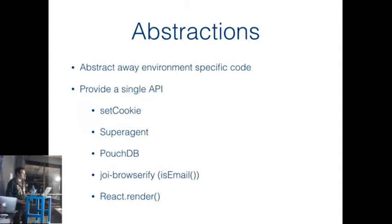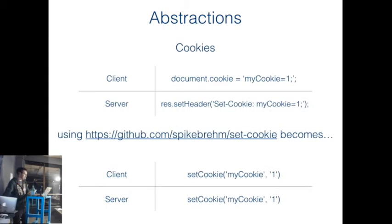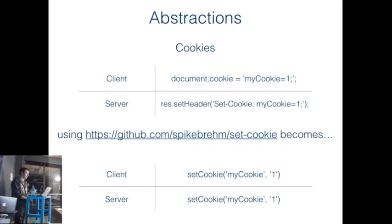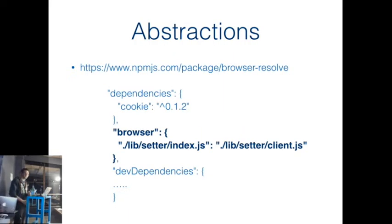React's render also works on both client and server. To show what these abstractions do under the hood - with setCookie, you don't want to be setting cookies with different code on client and server. On the client you'd set document.cookie, on the server using something like Express you'd use res.setCookie. The abstraction gives you a single API. There's clever tooling in NPM for this where you use your package.json to specify swapping out dependencies - either external modules or internal files. Browserify and Webpack are quite clever at bundling things up using this.